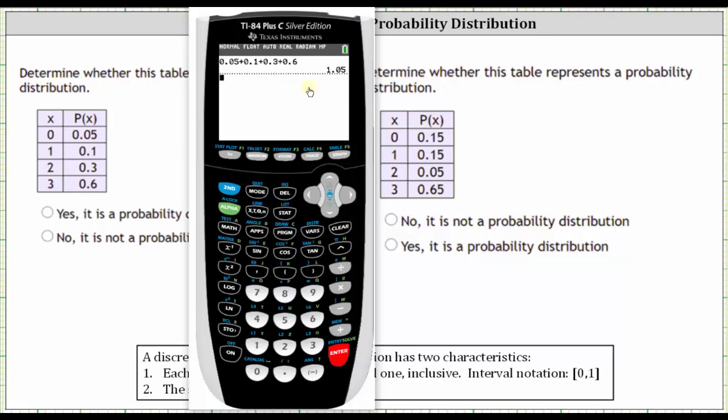Notice in this case, the sum of the probabilities is 1.05, not one, and therefore this is not a probability distribution.